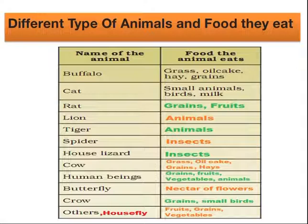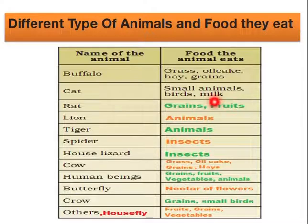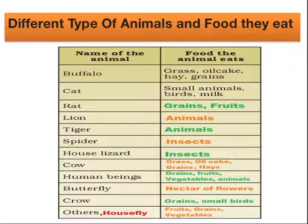Let's look at different animals and the food they eat. Buffalo eats grass, oil cake, hay, and grains. Cat eats small animals, birds, milk, and rats. Lion and tiger eat other animals such as herbivores. Spider eats insects, and house lizards also depend upon insects.